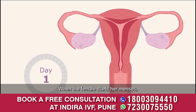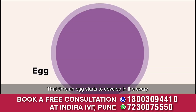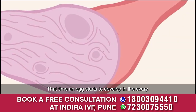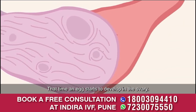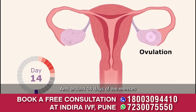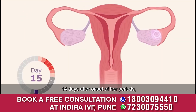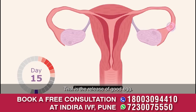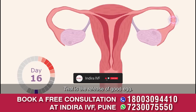Around day 14 of the menses, or 14 days after the onset of her periods, ovulation occurs — that is the release of a good egg.